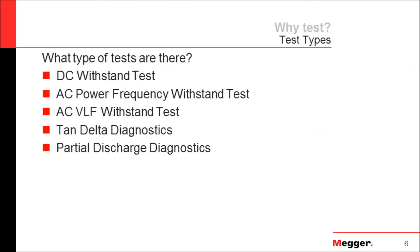When it comes to testing, for terminations, people are usually checking to see if the repair they did will hold when the cable is energized. And for maintenance testing, many people perform this test to check the quality of the cable over time. There are several main types of tests you can run on your cable to check its health and integrity: the DC withstand test, the AC power frequency withstand test, the AC VLF withstand test, and of course tan delta and partial discharge diagnostics.